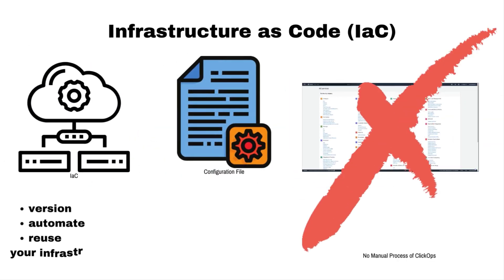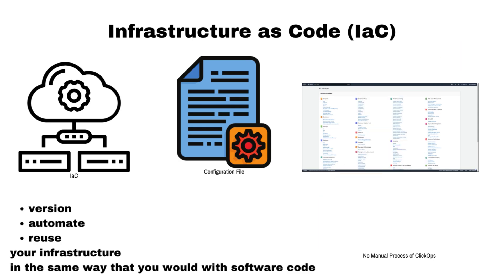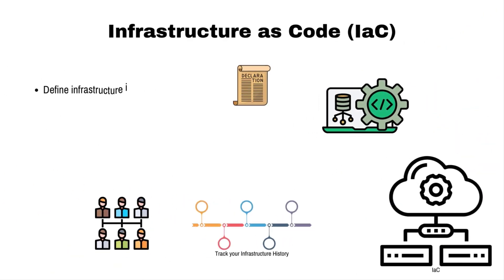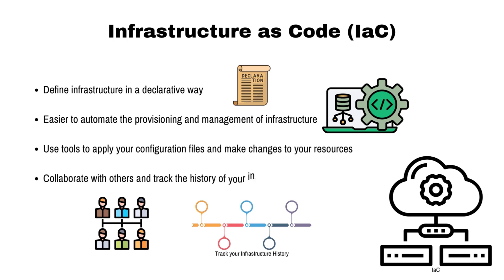Let's take a step back and define infrastructure as code, or IAC for short. IAC is an approach to managing infrastructure in which infrastructure resources are defined and managed using code and configuration files rather than using manual processes. This allows you to version, automate, and reuse your infrastructure in the same way that you would with software code. IAC makes it easier to collaborate with others and track the history of your infrastructure using version control systems to track changes to your configuration files.